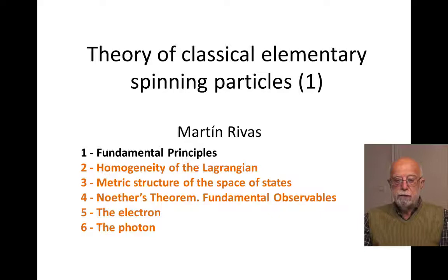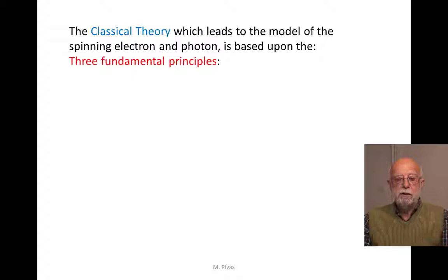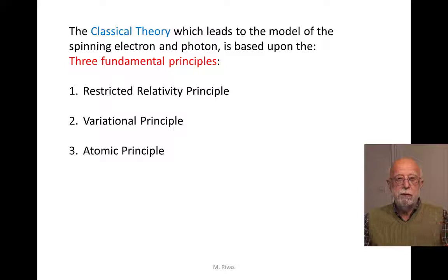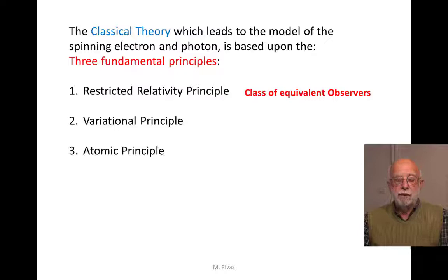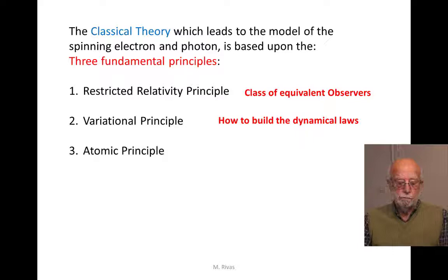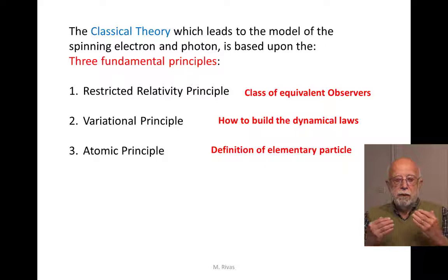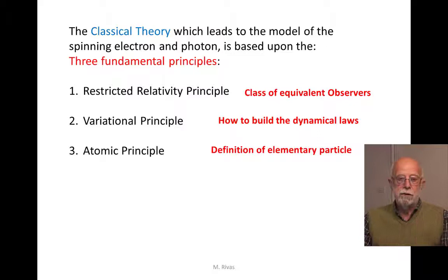Let's begin with the first lecture. The classical theory is based upon these three fundamental principles. First, a restricted relativity principle — the idea is to define what are the class of equivalent observers for which we are going to establish the dynamical laws of the mechanical systems. The second is the variational principle, by which through the calculus of variations we can build the dynamical laws. Finally, the atomic principle is the definition of an elementary particle, the idea that every portion of matter cannot be divided indefinitely, and we will give a mathematical definition of it.